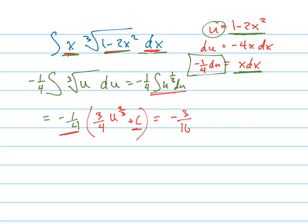Negative 3 sixteenths times u to the 4 thirds plus some other constant. I'll just call it k now so you don't get confused with that c. But again, it's just some other constant.